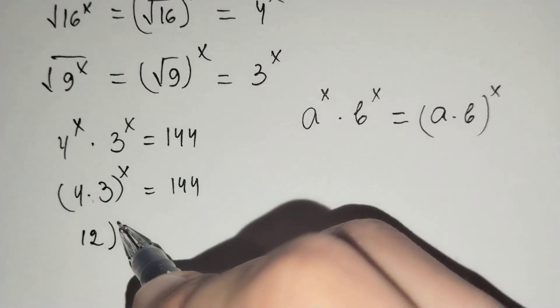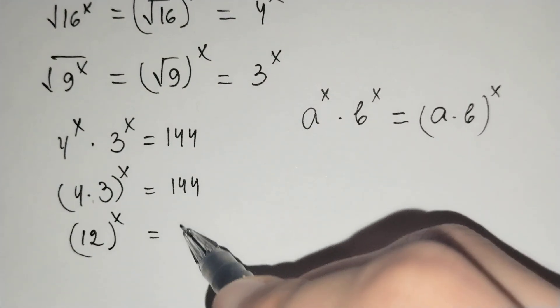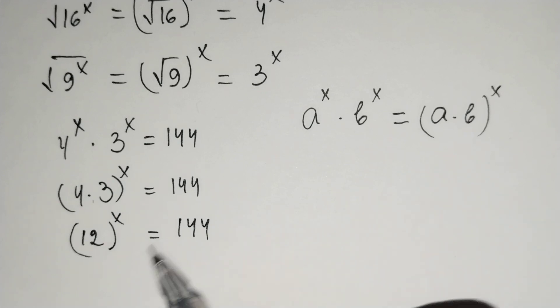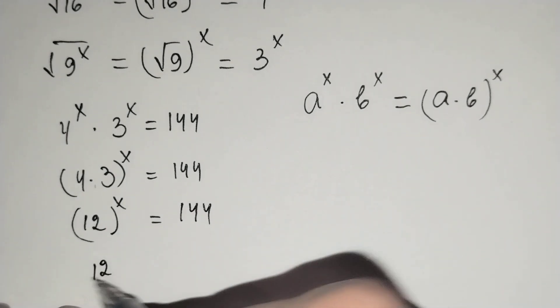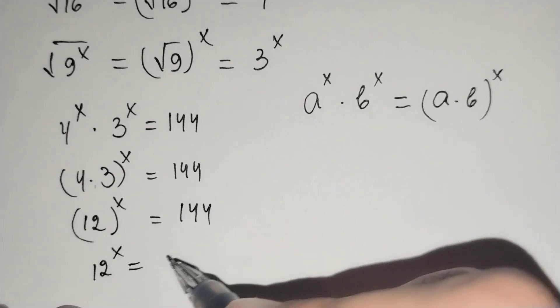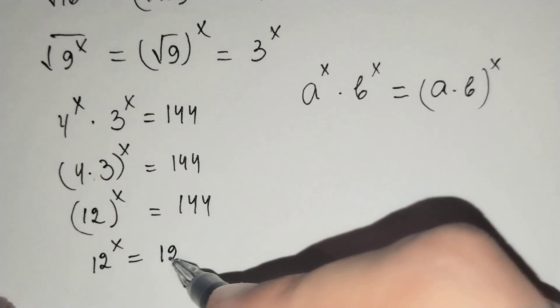12 power x equals to 144. And 12 power x equals to 12 power 2.